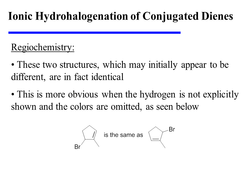So, these two structures, both of which result from the initial protonation of the blue pi bond, may initially appear to be different, but they are in fact identical. This is much more obvious when the hydrogen is not explicitly shown and the colors are omitted. We can appreciate that these two structures may be interconverted simply by rotation around this axis.